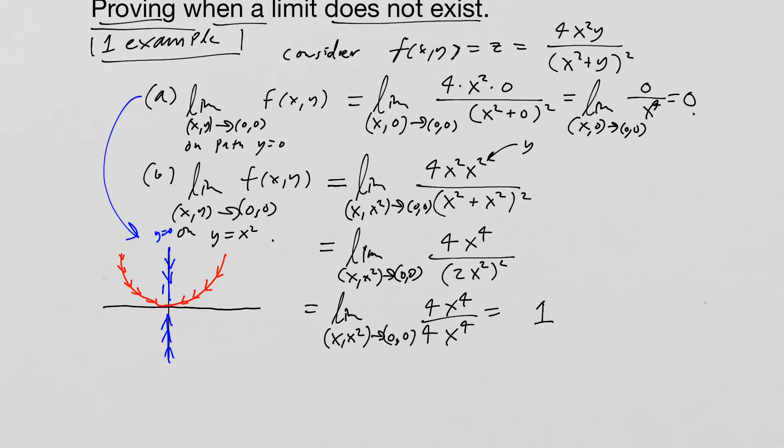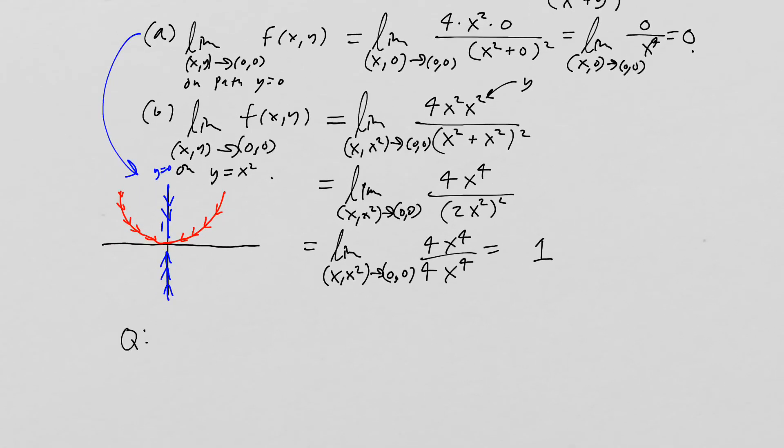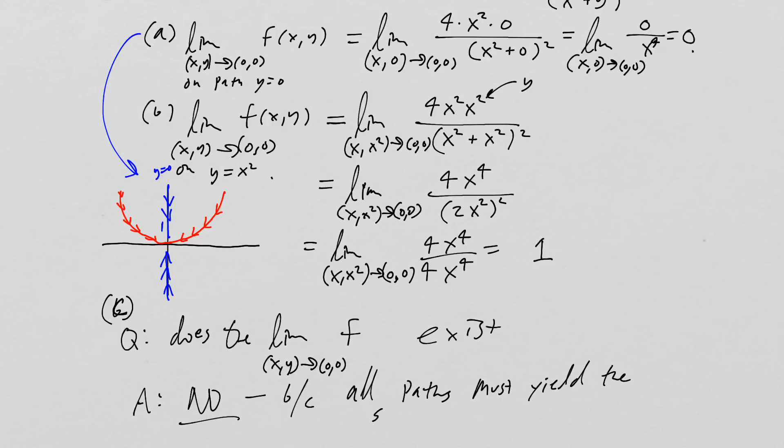So what are we going to do here? So the question then is the follow up question, the part B, or the part C if you will, is does the limit exist? And the answer is no. No, it doesn't. Because all paths must yield the same limit for the limit to exist. So that's the answer to this question. This is a good exam question.